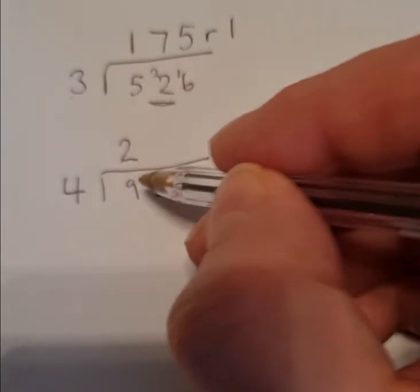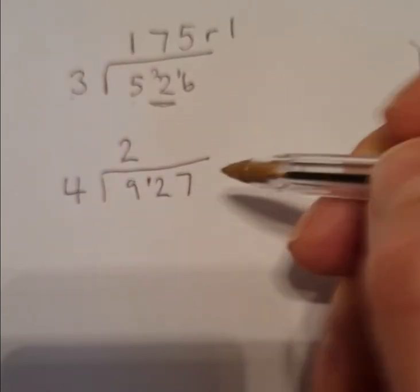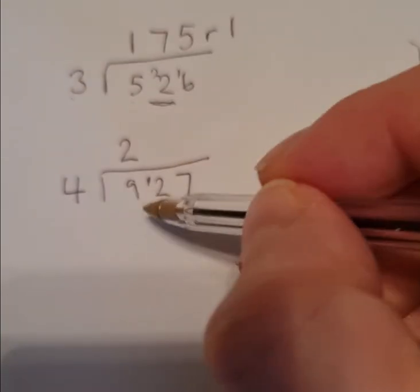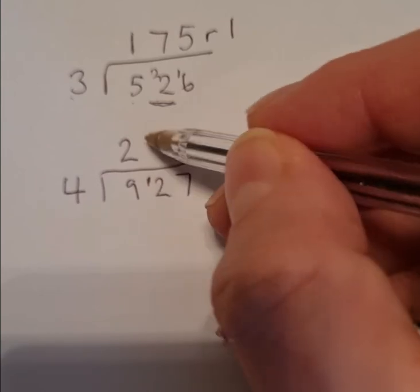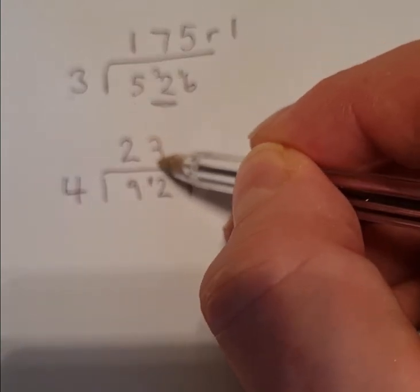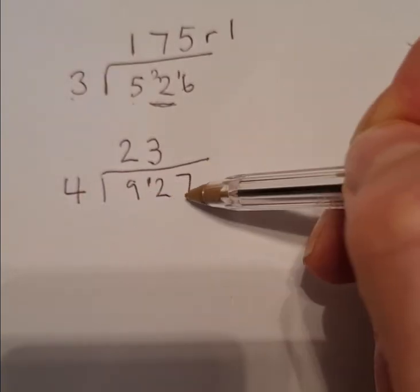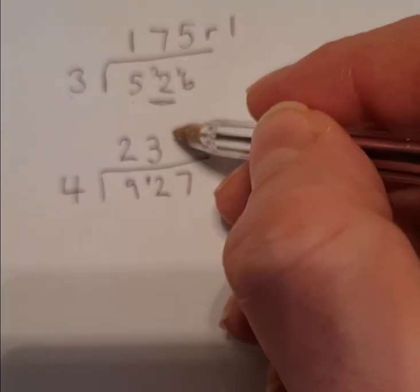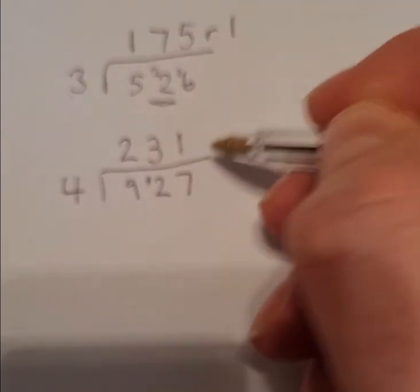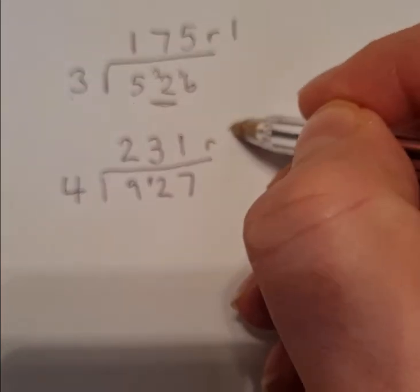And I've got one remainder. So I put that one remainder on the next number. So now I've got 4 into 12. Well I know that there are 3 4s in 12 exactly. Now I look at 4 into 7. Well I can fit 1 4 in 7. And I have a remainder of 3.